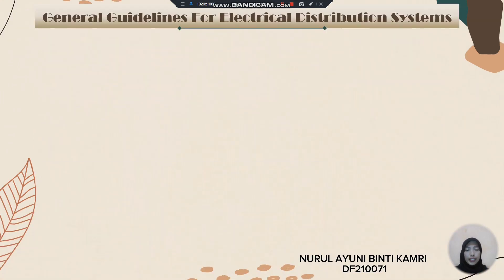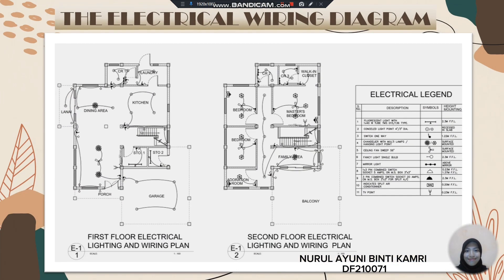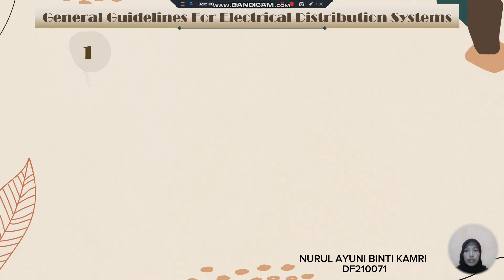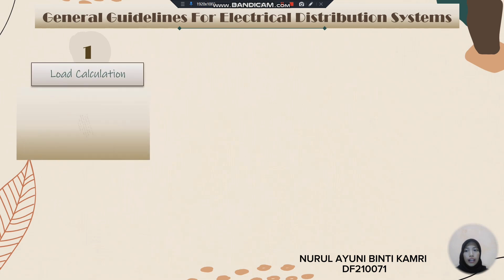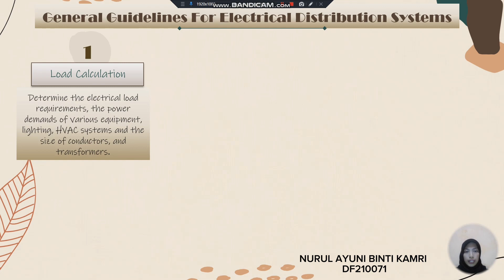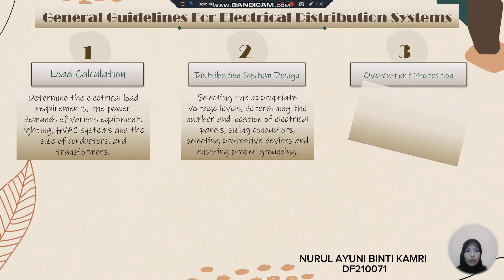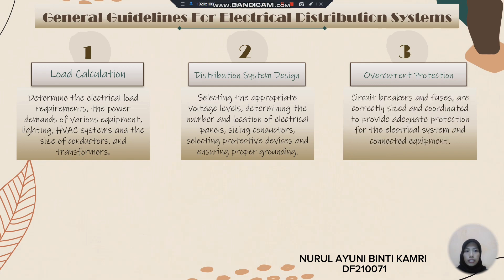I want to present the general guidelines for the electrical distribution system. Firstly, load calculation: it determines the electrical load requirement, power demand of various equipment, lighting and hatchback systems, and the sizing of conductors and transformers. Second is distribution system design, which involves selecting the appropriate voltage level, determining the number and location of electrical panels, sizing conductors, selecting protective devices and ensuring proper grounding. Third is overcurrent protection, which ensures circuit breakers and fuses are correctly sized and coordinated to provide adequate protection for the electrical system and connected equipment.